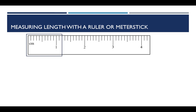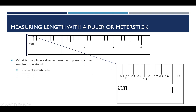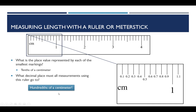Let's take that ruler and blow up the first part of it a little bit more. What I've done here is add some numbers you would not normally see on the ruler — I've explicitly indicated that this is 1 tenth, 2 tenths, 9 tenths, 1 and 1 tenth. This would be 1.0. So the smallest markings are tenths of a centimeter. What decimal place do we need to go to? Just like that previous number line, if these are tenths, we need to go to the hundredths — specifically, hundredths of a centimeter.